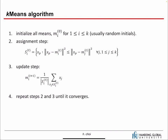Now let's talk about the actual algorithm. First, we initialize all the means M sub i. If we want three clusters, we need three means M1, M2, and M3. We just use random vectors as starting points. You might want a better initialization, but that's not an easy problem, so let's use random initials. Sometimes these random initials are really awkward, but it's okay.